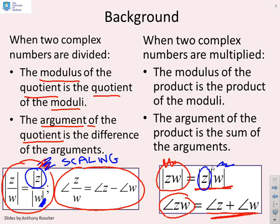What about the rotation? You can see that when I divide, I do a negative rotation because instead of having the argument of z, I've moved in a clockwise direction by the argument of w, because I've gone minus arg w. If I multiply two complex numbers, I'm rotating in an anti-clockwise direction because I'm going from arg z to arg z plus arg w.